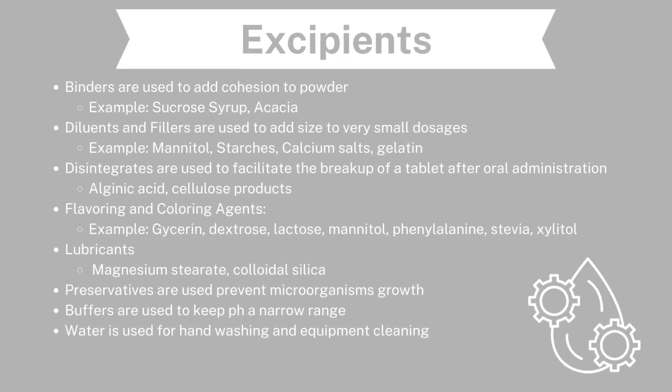Moving on to excipients — these are added to the active drug to help it maintain form and come in the tablet or capsule form that you usually see. These include binders, which add cohesion to powder (examples: sucrose syrup and acacia); diluents and fillers, which add size to very small dosages (examples: mannitol and starches); and disintegrates, which facilitate the breakup of a tablet after oral administration.